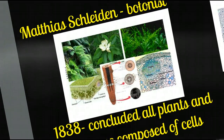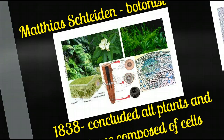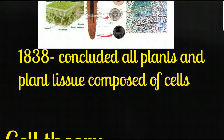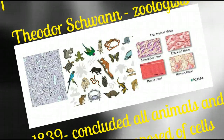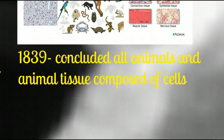In 1838, a German botanist, Matthias Schleiden, was investigating plants microscopically. No matter what type of plant or plant tissue he observed, he always saw this cellular structure. He concluded that all plants and plant tissue were composed of cells. The very next year, German zoologist Theodor Schwann, after observing many different types of animals and animal tissue, concluded the same thing about animals.